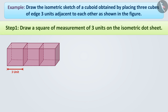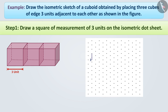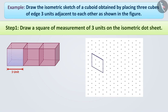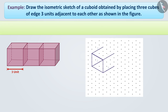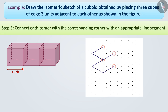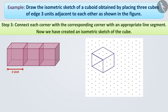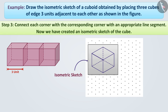Step 1: First, we will draw a square of measurement of 3 units on the isometric dot sheet. This square represents the front face of the cube. Step 2: We know that all the edges of the cube are equal. Therefore, we will now draw 4 line segments of length 3 units each from the 4 corners of the square. Step 3: Now, we will connect each corner with the corresponding corner with an appropriate line segment. This square represents the face opposite to the front face of the cube. Now, we have created an isometric sketch of the cube.